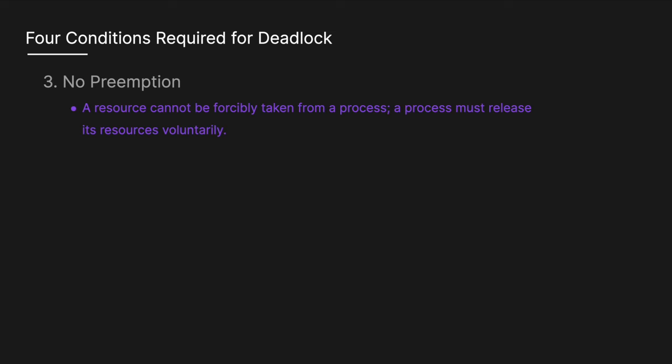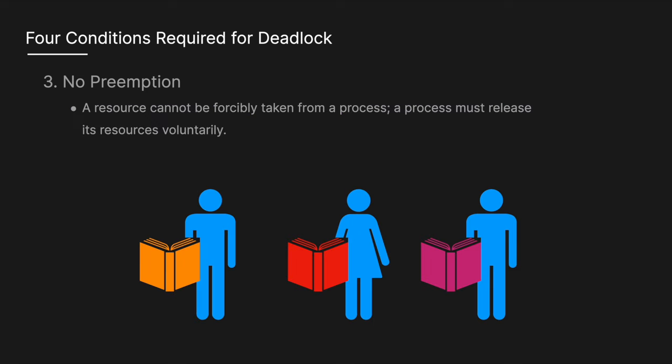The third condition is no preemption — a resource cannot be forcibly taken from a process; a process must release its resources voluntarily. An analogy is being at a library with a rule that says you can't take a book from someone else until they're done with it. If everyone holds on to their books and waits for others to finish without giving up theirs, no one will release their book and everyone ends up waiting indefinitely.